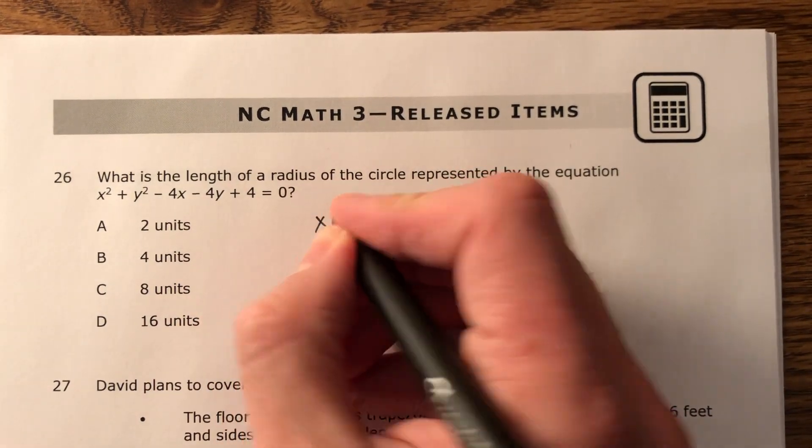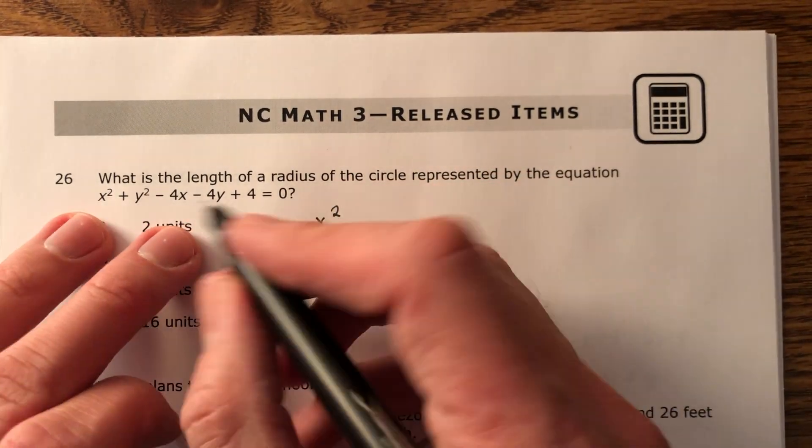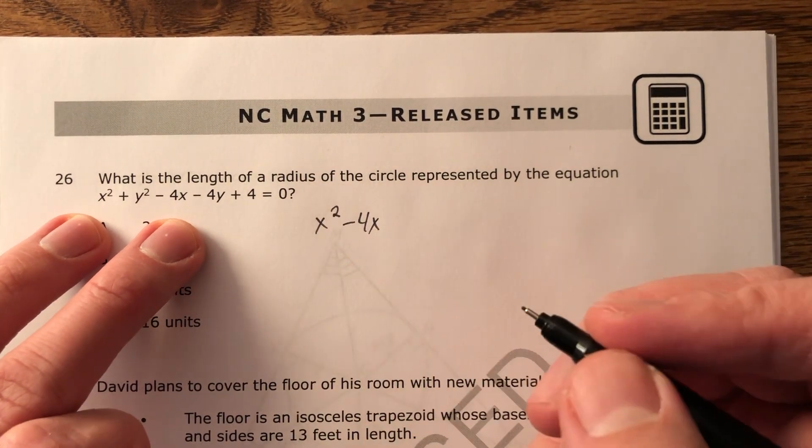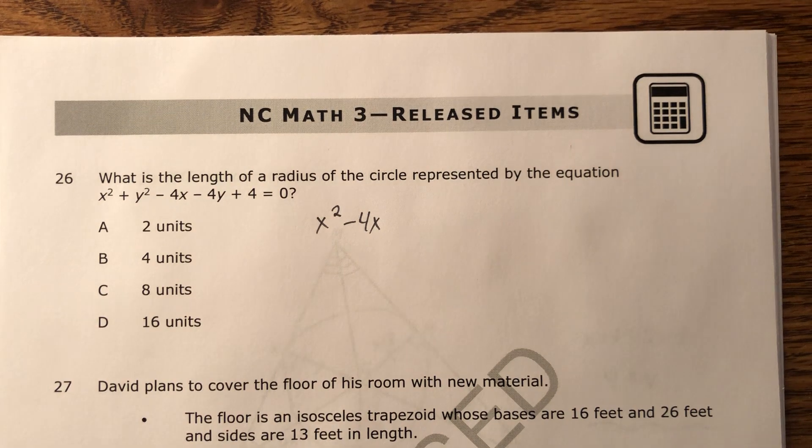So I have x squared. I'm going to put my x's together. So x squared minus 4x, I'm going to group them together. They are unlike terms, I cannot combine them, but I will group them together.